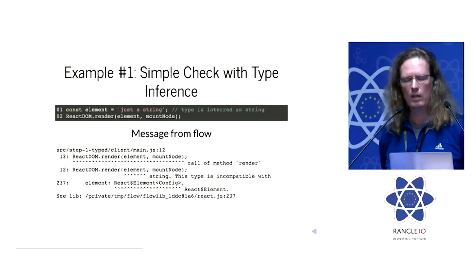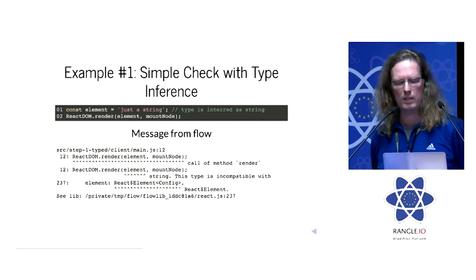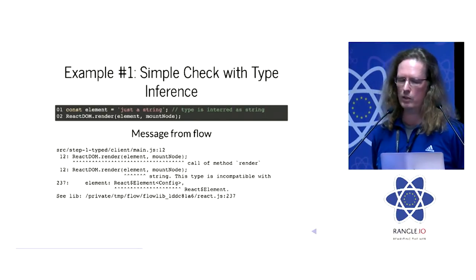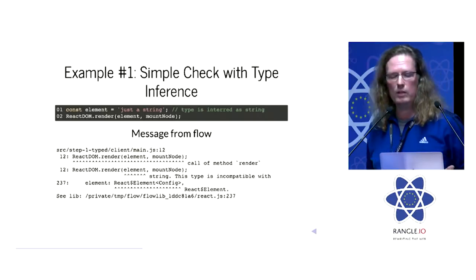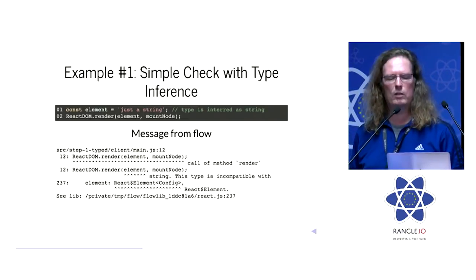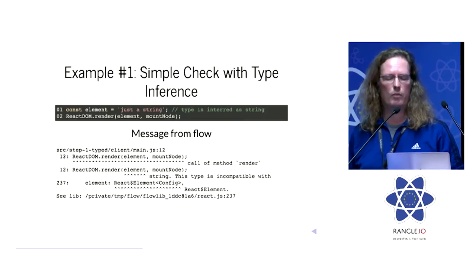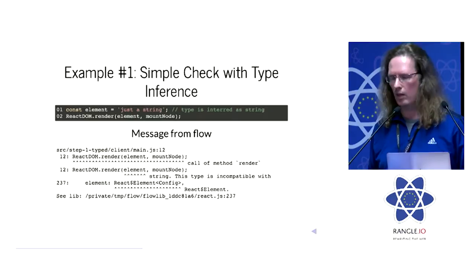Because what you actually have to do is provide a React element, but you have not. You would actually notice once you run that program, but in this case, Flow tells you. It tells you you're providing a string, but you're supposed to provide a React element. Please notice that I did not provide any type information here. Flow actually infers the type that this is a string. That's very easy.